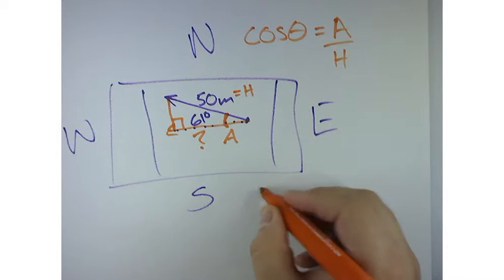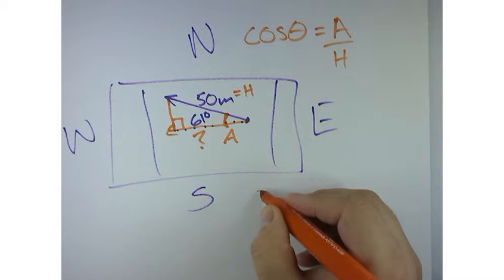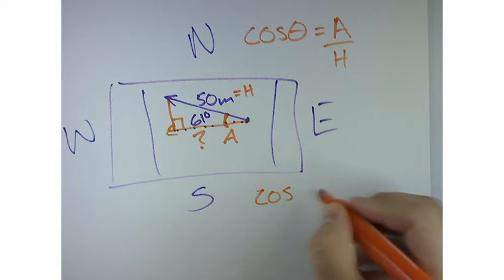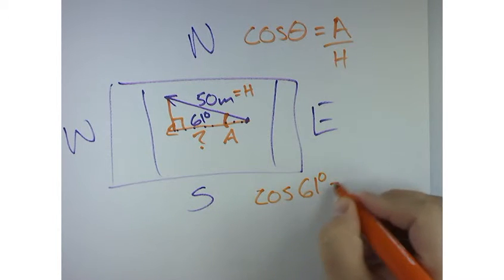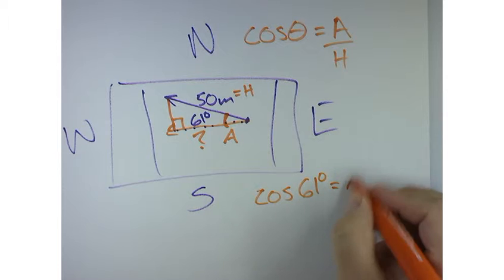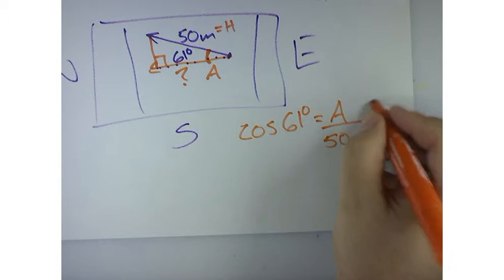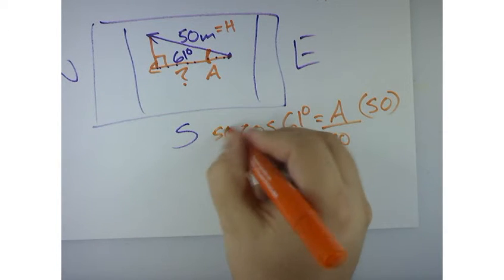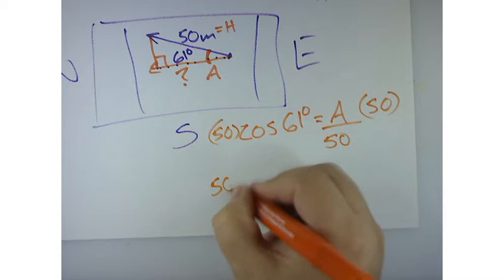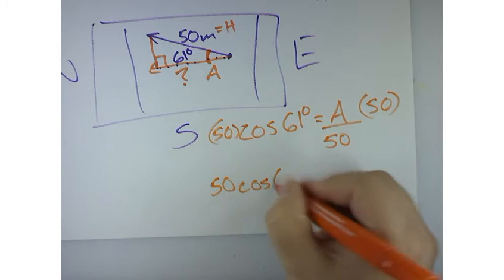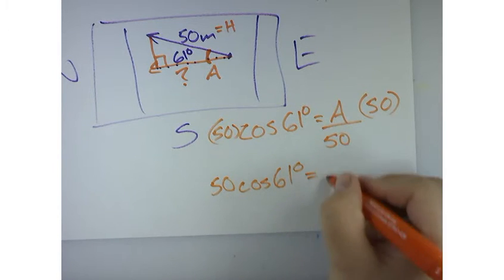So what I really need is cosine of 61 degrees is equal to A over the hypotenuse, which is 50. If I multiply both sides by 50, I get 50 times cosine of 61 degrees is equal to the adjacent.